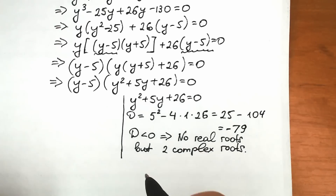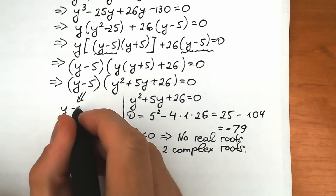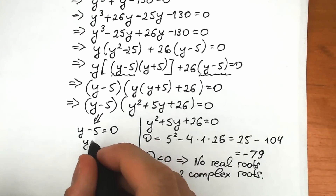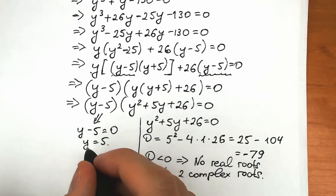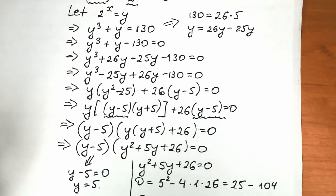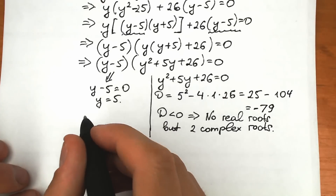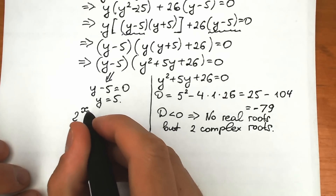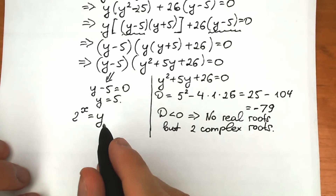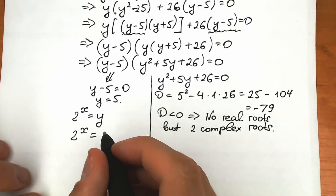What about the other factor? y minus 5 equal to 0 gives y equal to 5. But what about our substitution? We have 2 to the x equal to y, and y equal to 5, so we have the equation 2 to the x equal to 5.